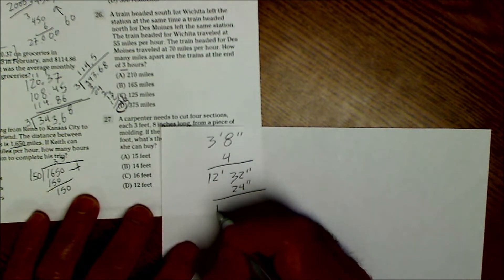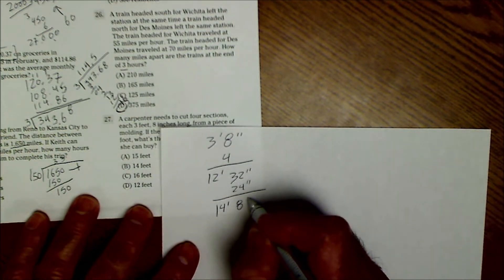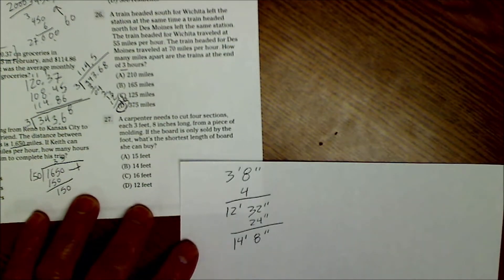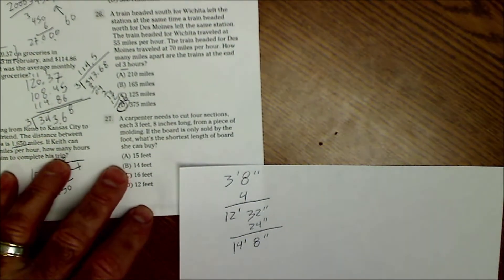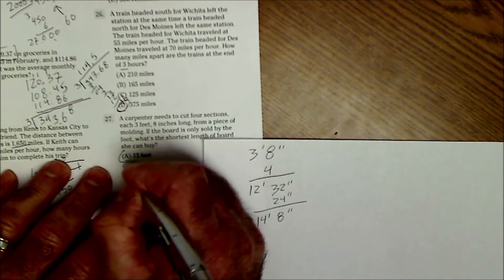14 feet, eight inches. So I've got 14 feet, eight inches. What's the shortest board by the whole foot? It's going to be 15 feet. Answer A.